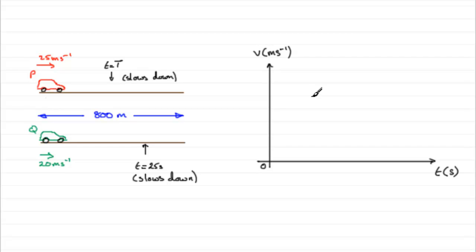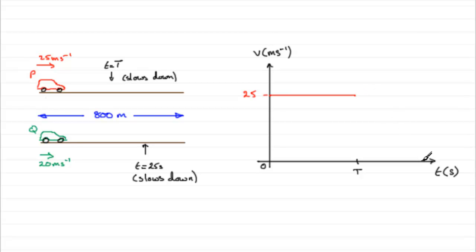Let's start with P. P is moving at a constant speed of 25 metres per second, so I'll mark 25 here — we'll do it in red. If it's moving at a constant speed it's going to be a horizontal line, and then we know that at a particular point where T equals big T, it starts to decelerate at a constant rate. Coming to rest after 800 metres, the graph's going to look something like this. We'll label that as P.